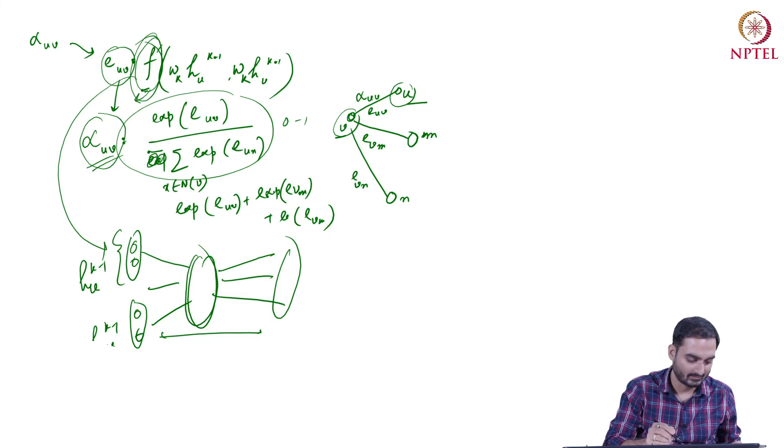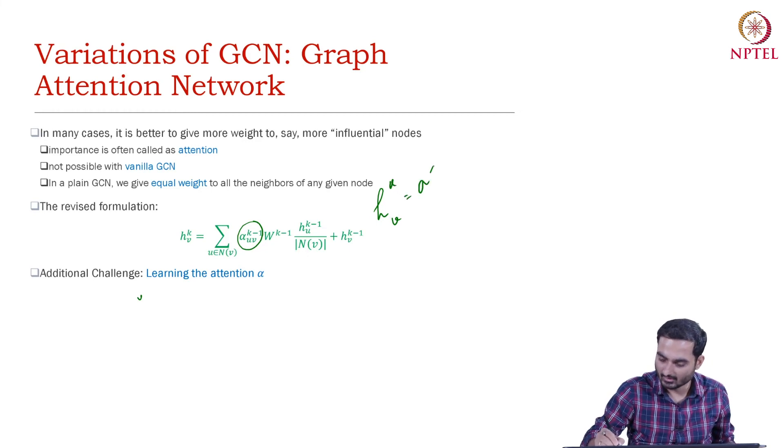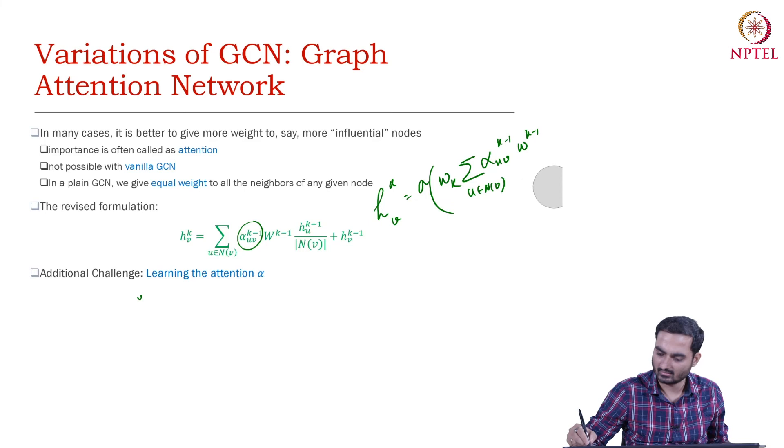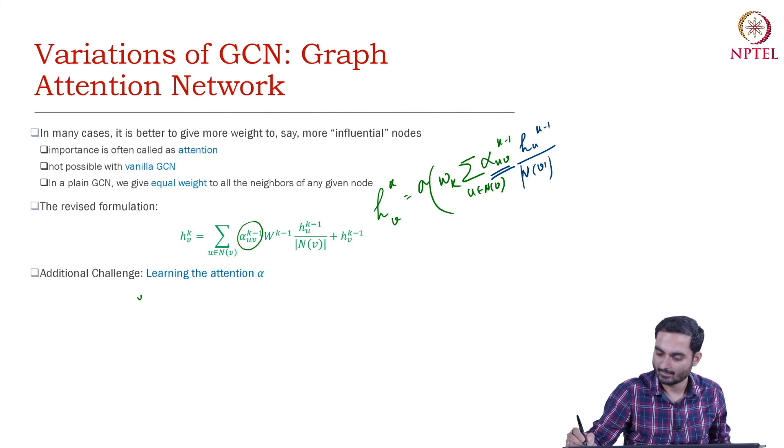And this alpha will later be used right here, as you see here, in this part. So then your hidden state at k for node v would be sigmoid of W^k - this is h_u^{k-1}. This is normal aggregation. And now this is the weighted part. Earlier it was 1 by n_v. And then you have another part here which is B.